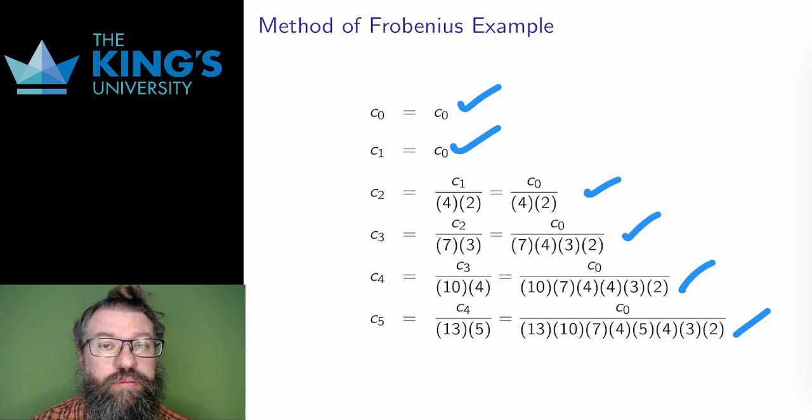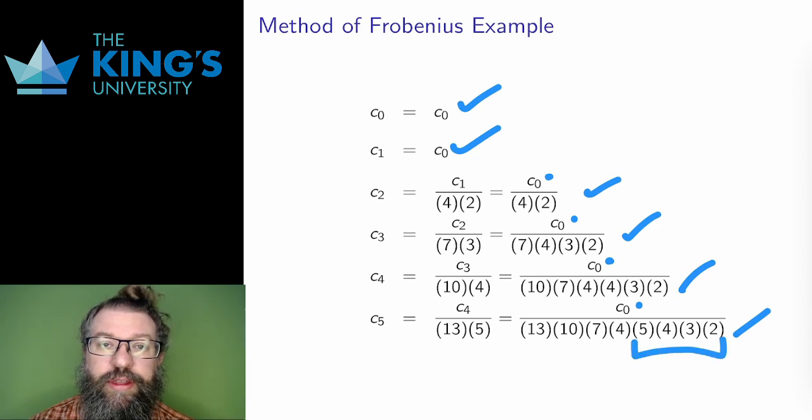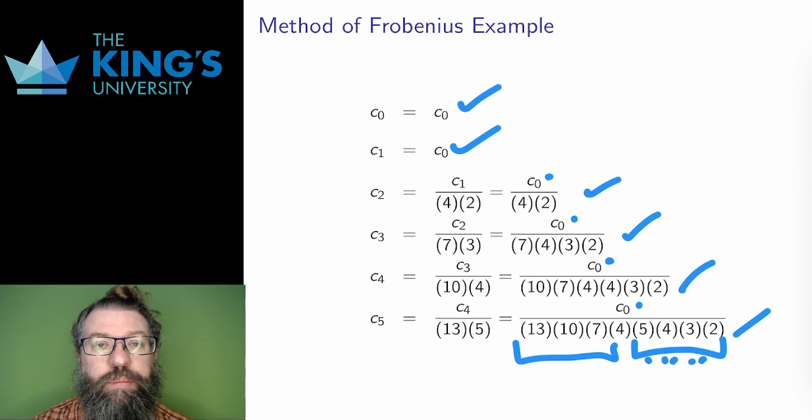What's the pattern here? The numerators are all just c₀, and the denominators are a product, and that product is being built in two pieces. The second half is just building a factorial, but the first half is building a product of each third number. So this could be 4 times 7 times 10 times 13, and so on.